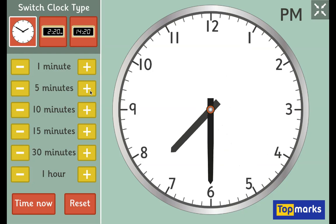When we get to the 6, we've gone halfway around the clock, which means it's half past. After we get from half past, we then start to talk about the time being 'to' the next hour.